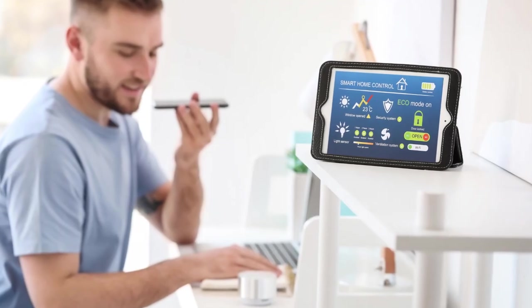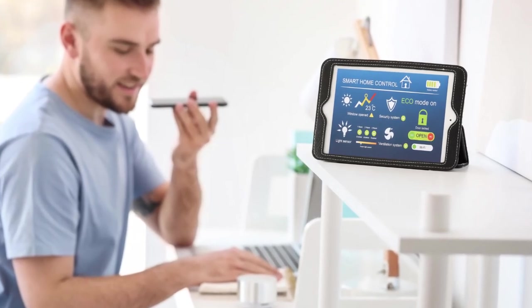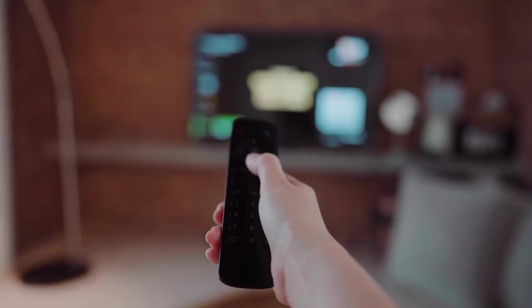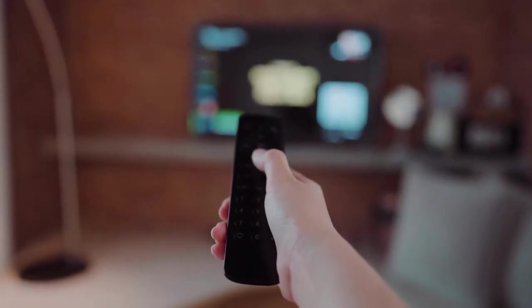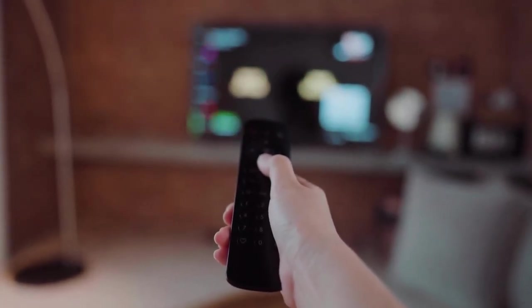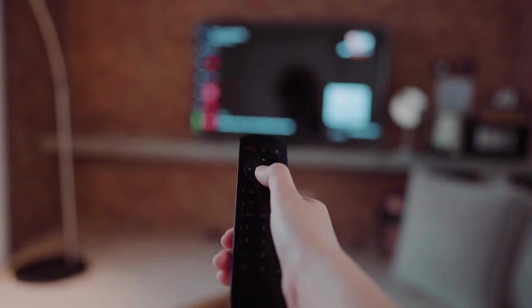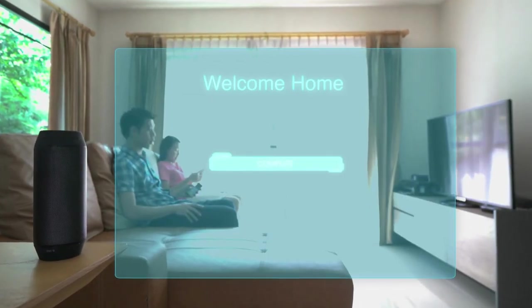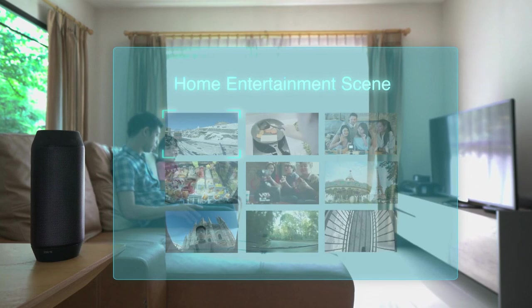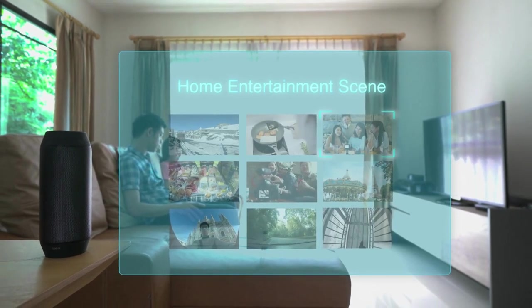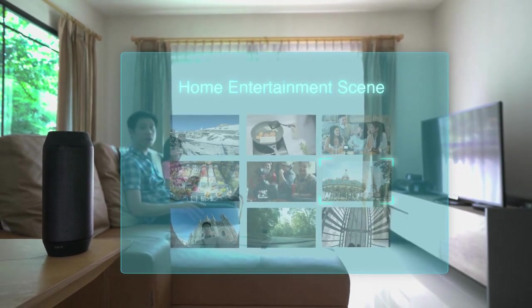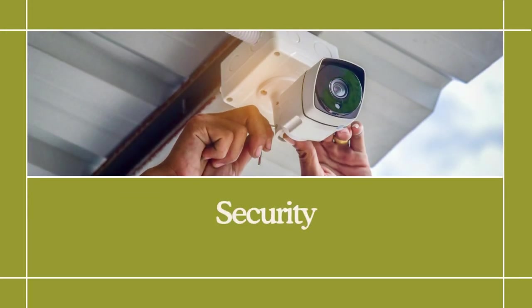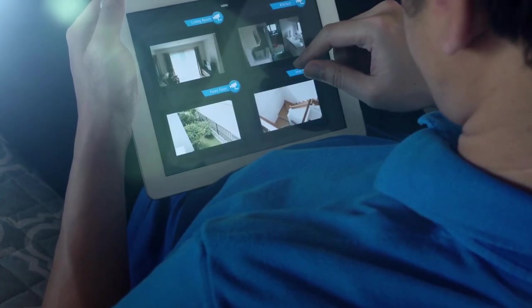Audio/visual: many entertainment gadgets are now highly connected to one another and can be managed with a single remote, which is one of the more entertaining features of smart homes. With the help of software, speakers and televisions can now play content on demand and even be voice controlled or kept on a schedule.